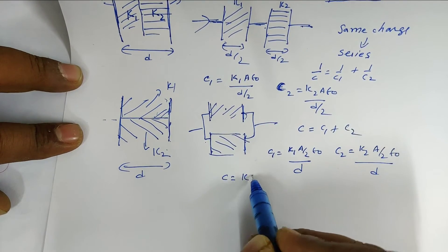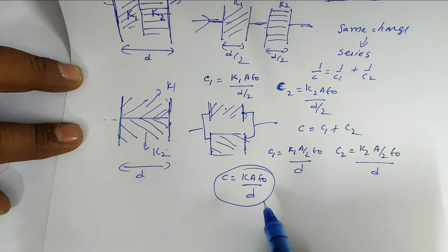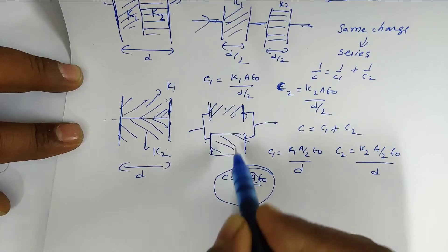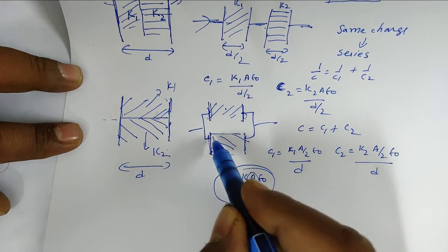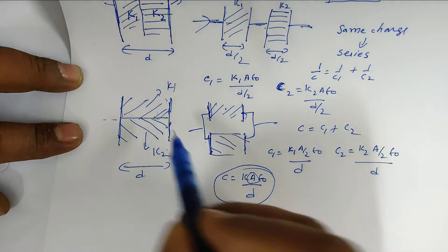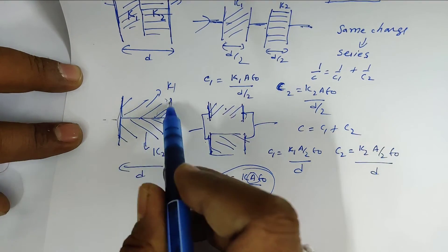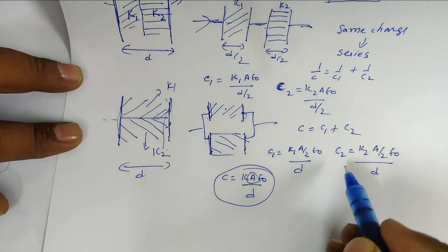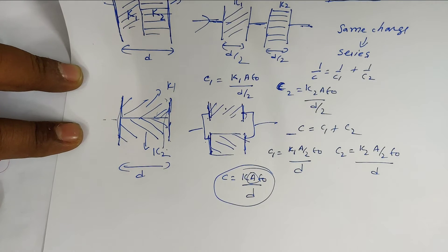Therefore C = (A/2)·ε₀/D·(K1 + K2). That's the answer for question number 5.